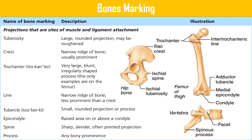Bone markings: projections that are sites of muscle and ligament attachments include tuberosity, crest, trochanter, line, tubercle, epicondyle, spine, and process. A tuberosity is a large rounded projection, possibly roughened; a crest is a narrow ridge of bone, usually prominent; a trochanter is a very large, blunt, irregularly shaped process found only on the femur. A line is a narrow ridge less prominent than a crest; a tubercle is a small rounded projection; an epicondyle is a raised area on or above a condyle; a spine is a sharp slender pointed projection.